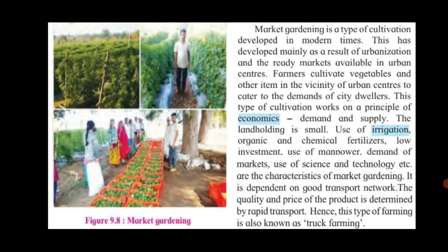Next, we shall learn about market gardening. Market gardening is a type of cultivation developed in modern times, mainly as a result of urbanization and ready markets available in urban centers. Farmers cultivate vegetables and other items in the vicinity of urban centers to cater to city dwellers. This type works on a principle of demand and supply. The land holding is small. Use of irrigation, organic and chemical fertilizers, manpower, and science and technology are its characteristics. It is dependent on a good transport network, and is also known as truck farming.